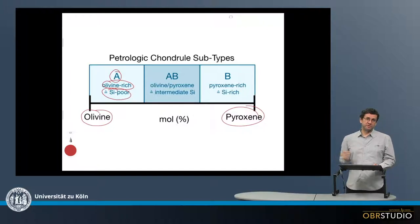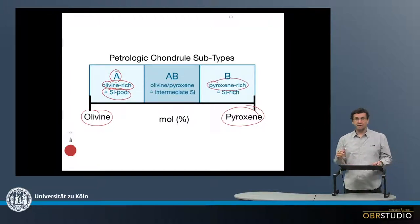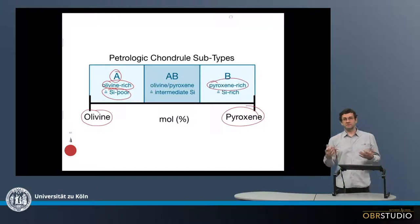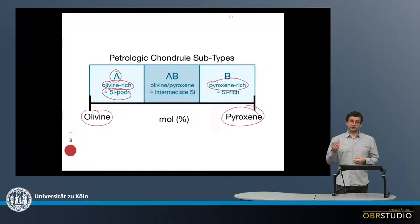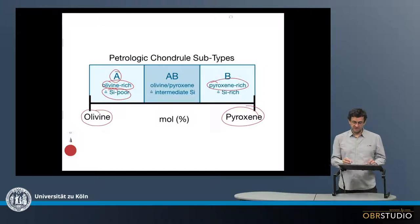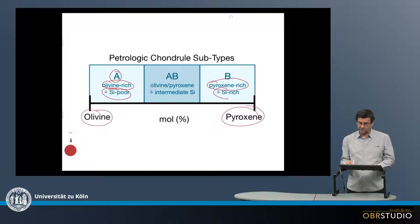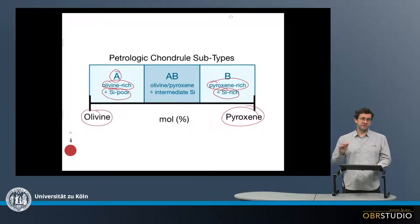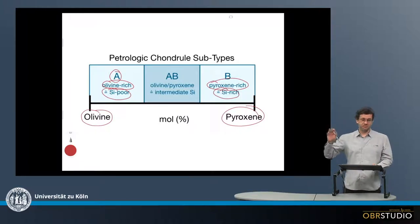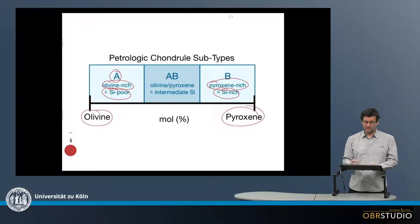On the other side, with the pyroxene, it is of course pyroxene-rich, and because in enstatite the magnesium-to-silicon ratio is one, it is comparatively silicon-rich. So this is one of the distinctive characteristics of Type A and Type B: silicon-poor and silicon-rich.